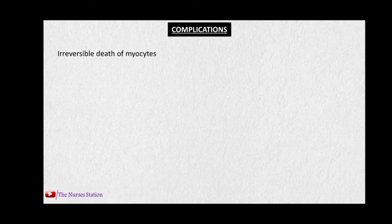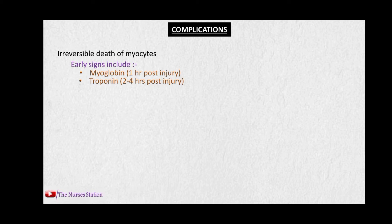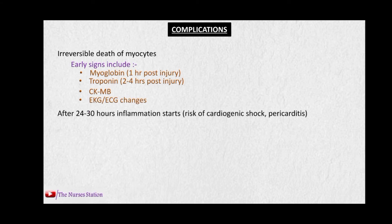Complications of myocardial infarction include the irreversible death of myocytes. Early signs indicating this include myoglobin, which is detectable in blood one hour post-injury but is not very specific to heart muscle cells. Troponin is released from four hours post-injury and is more specific than myoglobin to heart muscle cells. Other early indicators include creatine kinase myocardial band and EKG/ECG changes. After 24 to 30 hours, inflammation starts, which increases the risk of cardiogenic shock and pericarditis.